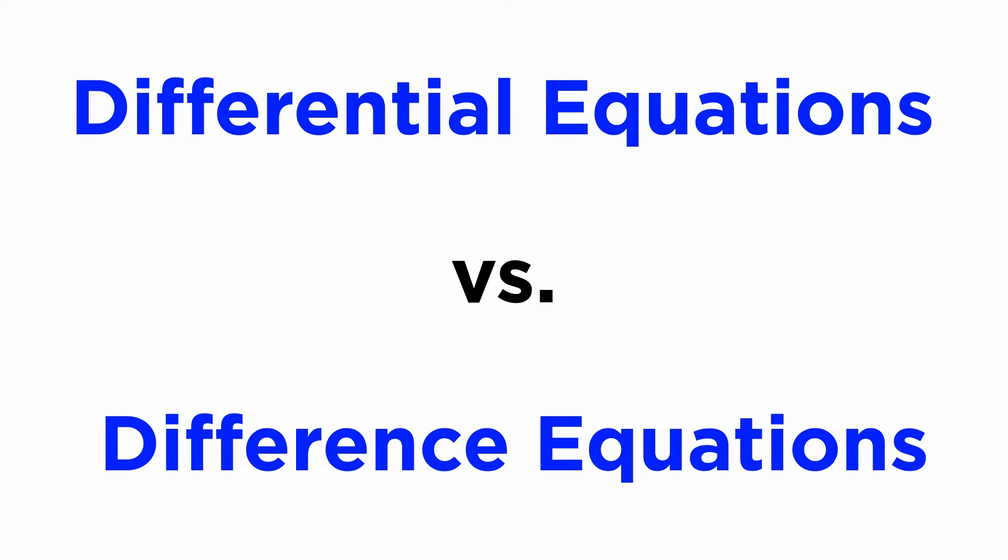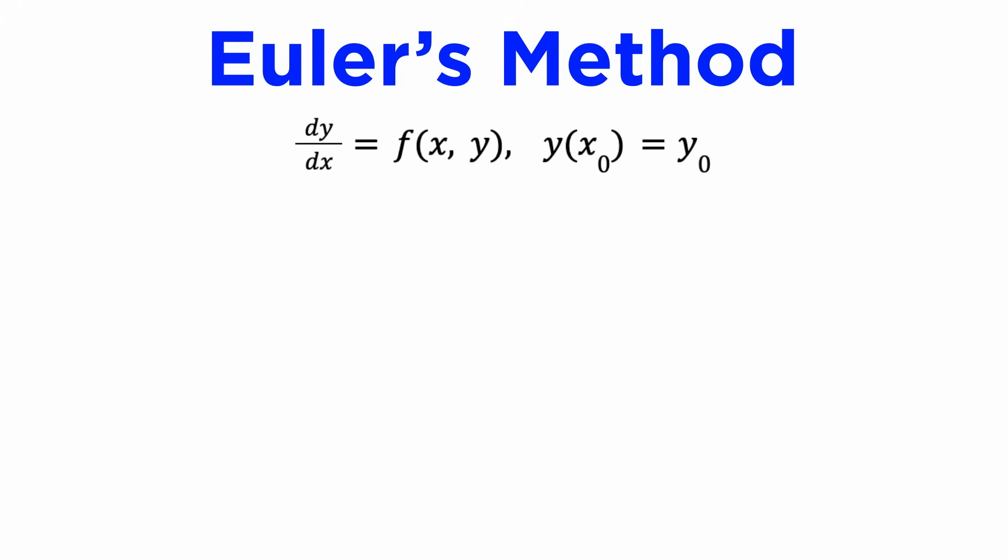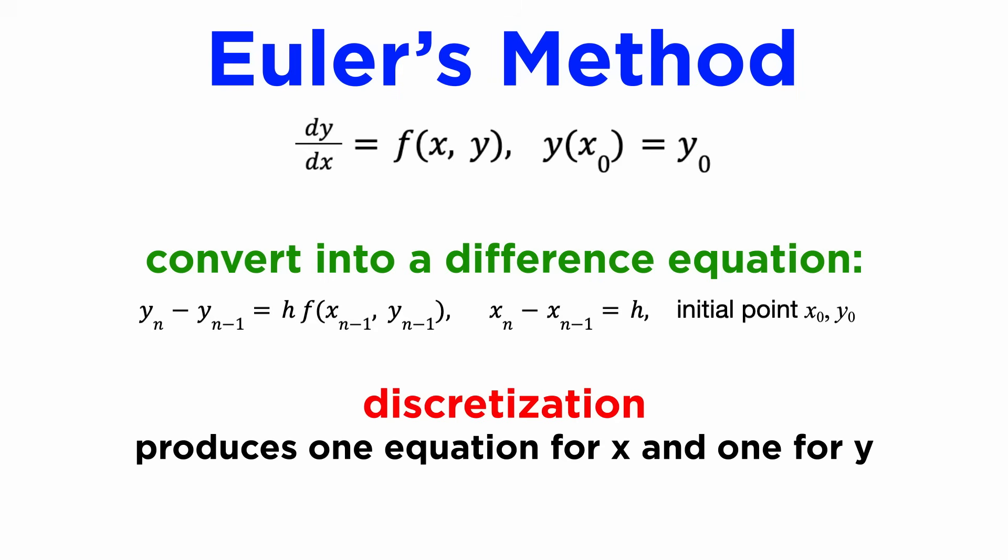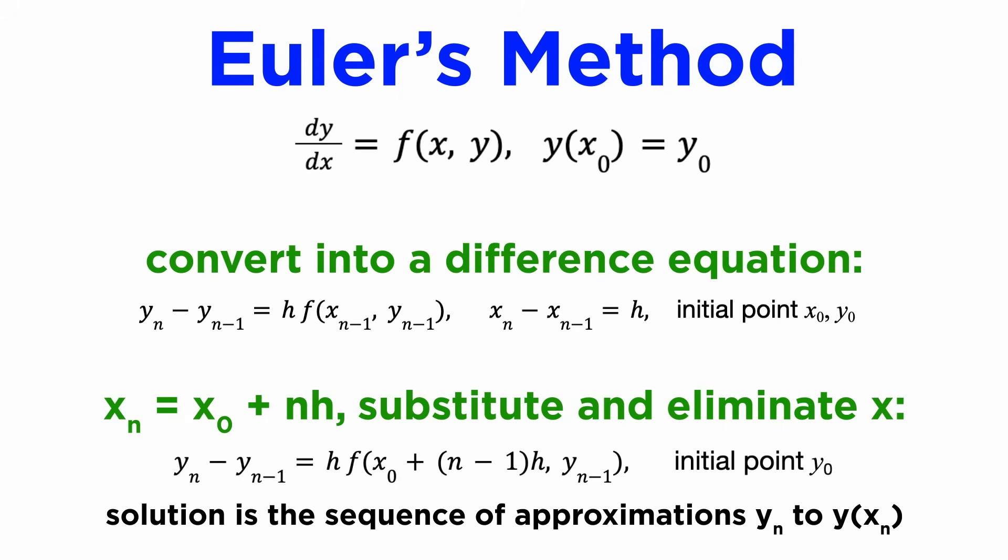We can see that differential equations and difference equations have a lot in common. When we learned about numerical methods such as Euler's method, we were effectively converting our differential equation into a difference equation, a process known as discretization, giving us a system of difference equations, one for x and one for y. We then iterated through these difference equations to obtain the discretized solution as an approximation to the continuous curve.